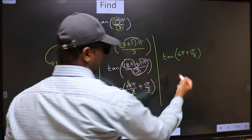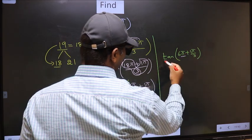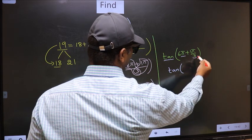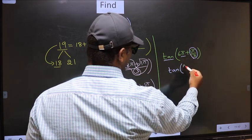Here we have π, so tan is not going to change. It will remain tan. And inside, we get this angle π/3.